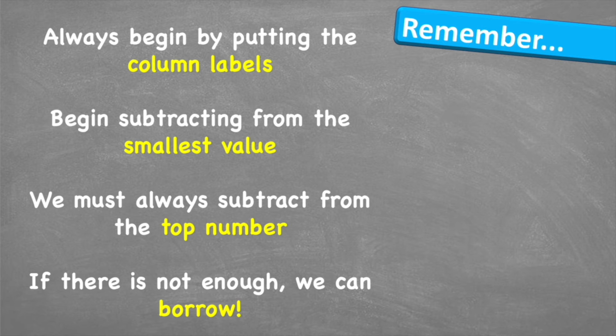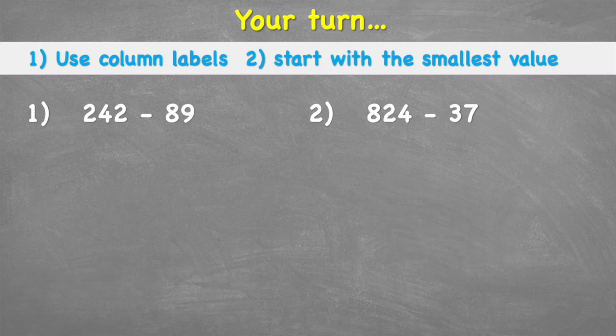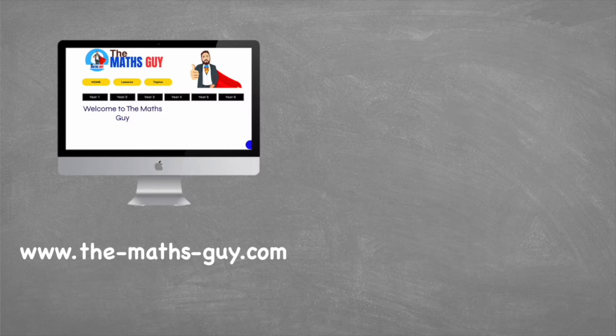To remember: always begin by putting your column labels — ones, tens, and hundreds — to avoid mistakes. Begin subtracting from the smallest value and always subtract from the top number; that is the most important part of this lesson. If there is not enough to subtract, you can borrow from next door. Have a go at the two practice questions and put your answers in the comments — I'll mark every single one.